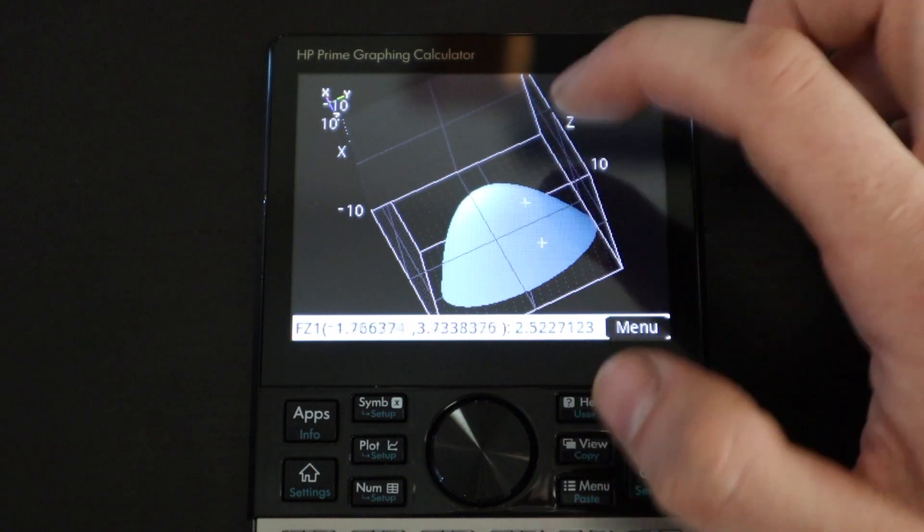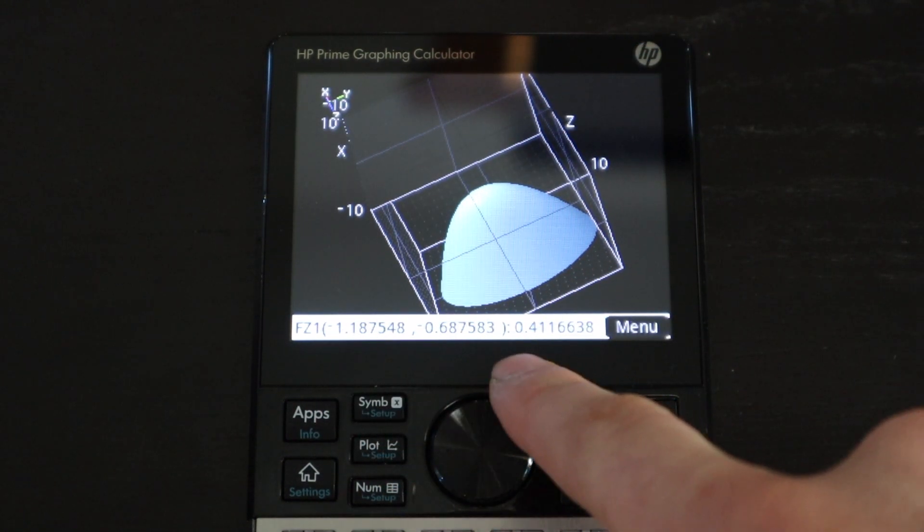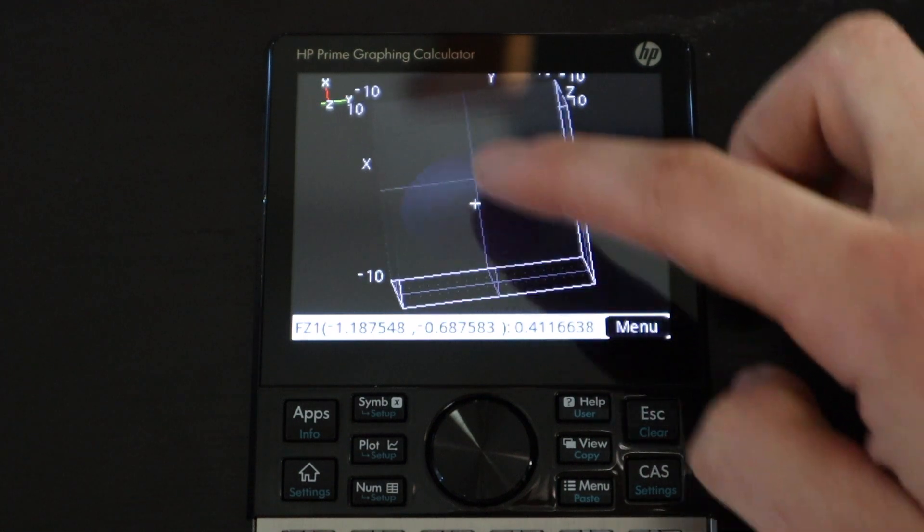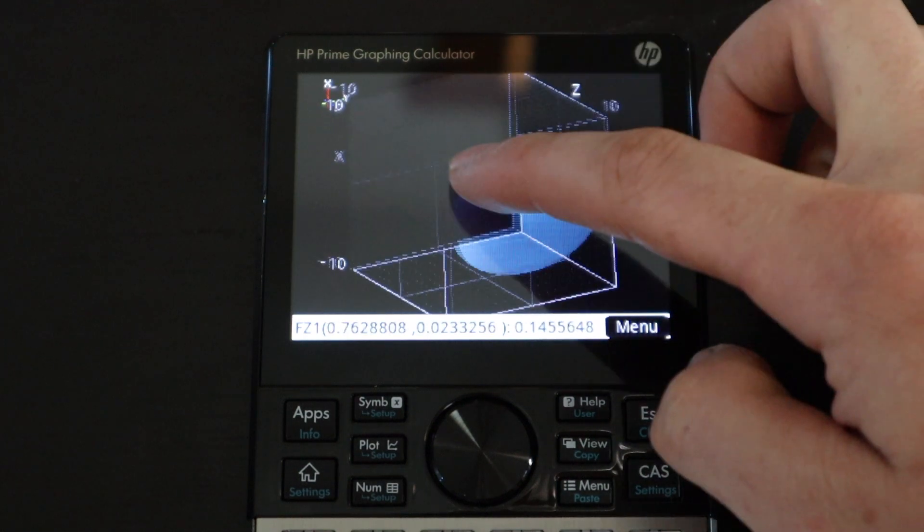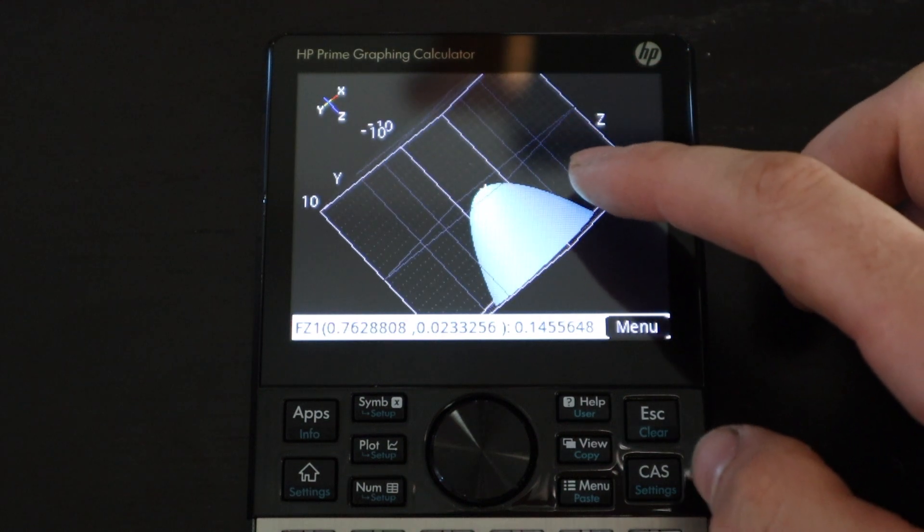And as you can see, it's not very accurate. But once I put the cursor in a place, it will give me the coordinates down here. But there's really no way to accurately tap on the screen and tell the calculator exactly where you want to put the cursor.